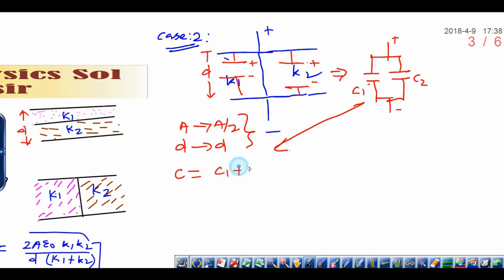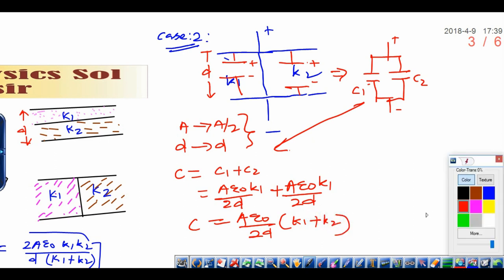Now when you see carefully this diagram, it is net capacity in parallel. In parallel, capacity will be C1 plus C2. You can put here the value of C1, which is A by 2 epsilon naught K1 divided by D, plus C2, which is A by 2 epsilon naught K2 divided by D. Net capacity in case 2 you can write as A epsilon naught upon 2D, this is constant in both cases, and inside the bracket you will get K1 plus K2. This is the final result.